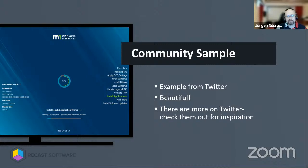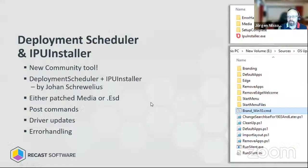Before we close, we'll talk about the new tools. Basically it's actually two — you should check them out on the same web page. Deployment Scheduler is basically for scheduling all different kinds of deployments: available apps, required apps, software updates, and so on. But it can also be used for new Windows versions as well.